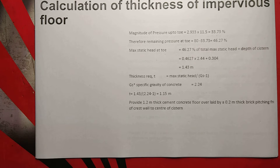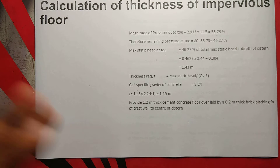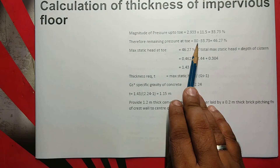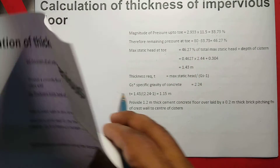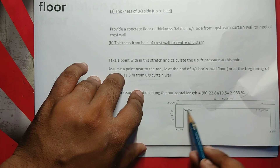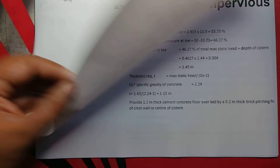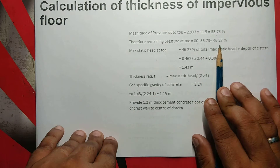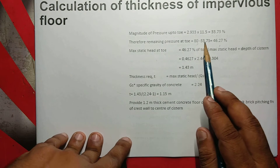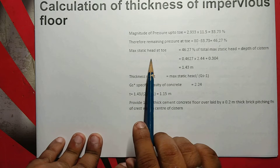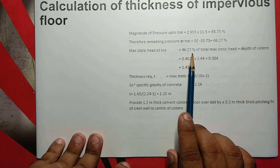Therefore the remaining pressure is at toe. The remaining pressure at toe is 80 minus 33.73, which is 46.27.